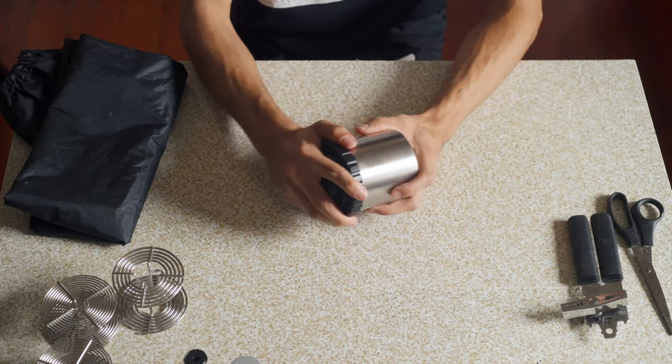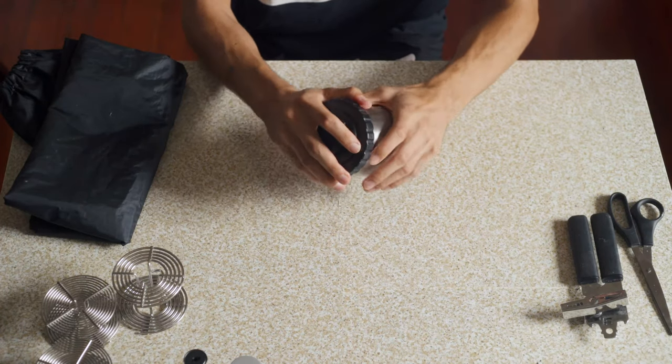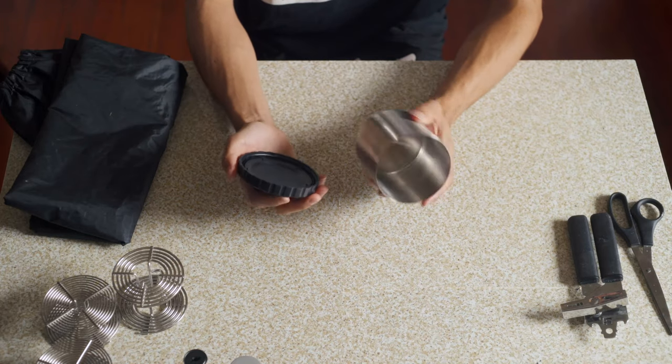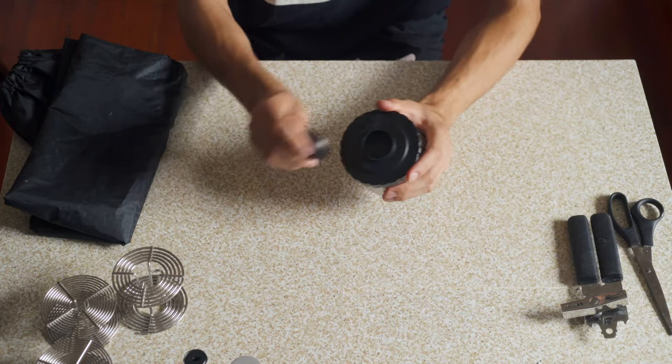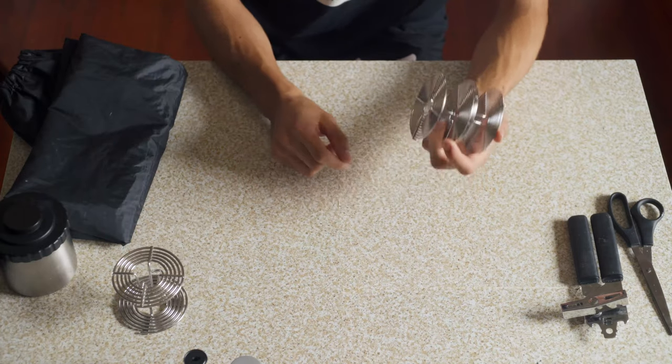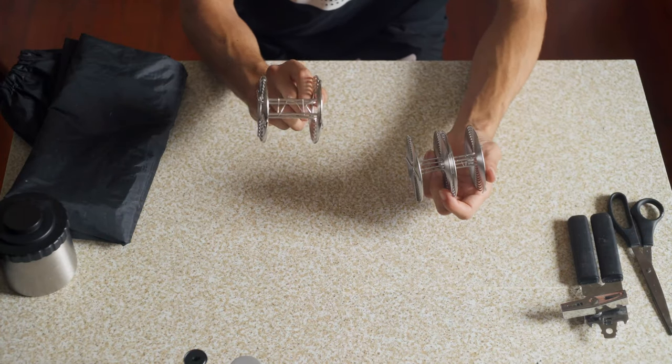A daylight developing tank, which is a light tight tank that keeps light from entering, but also allows liquids to pour in. And you'll need reels for that tank, which will either be 35 sized or 120 sized.